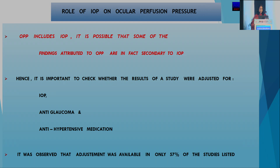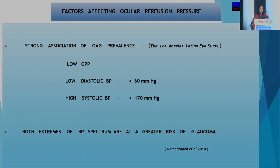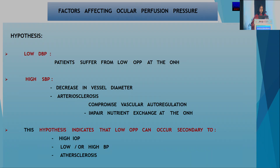Since OPP itself includes IOP, some findings attributed to OPP may actually be secondary to IOP, so it is important to check whether study results were adjusted for IOP, anti-glaucoma, and antihypertensive medication. Adjustment was available in only 57% of studies. A strong association of open-angle glaucoma was found with low OPP, low diastolic BP less than 60, and high systolic BP greater than 170—both extremes of the BP spectrum are at greater risk of glaucoma.